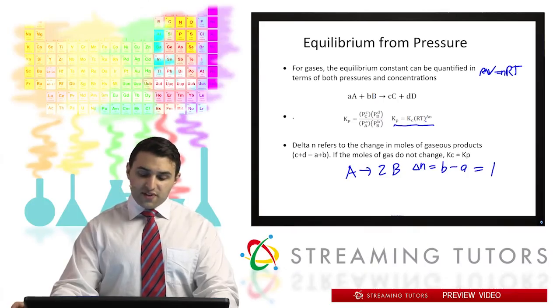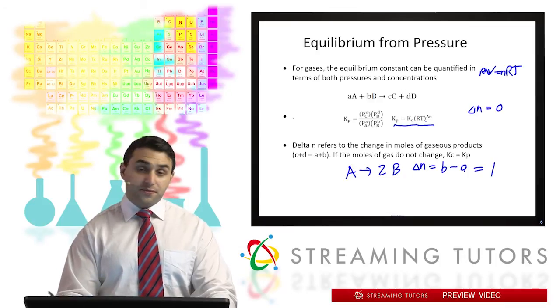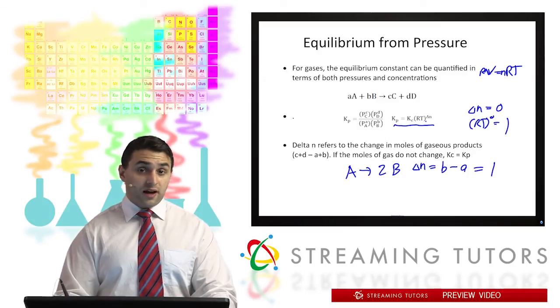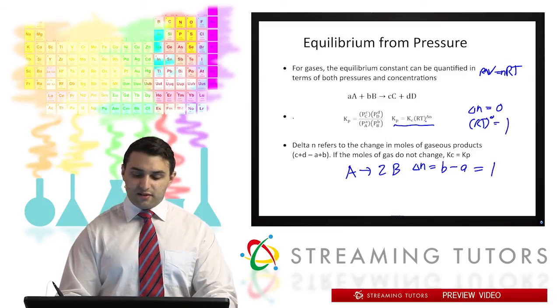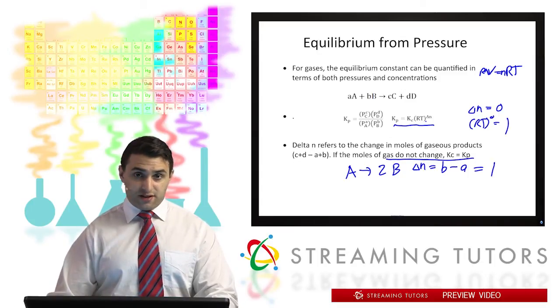If the moles of gas don't change, if delta N equals zero, that would mean that the expression RT becomes equal to one and Kp would equal Kc. So as that says in the final line down there.